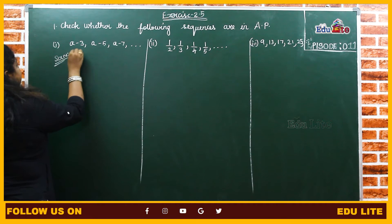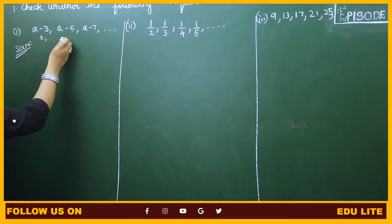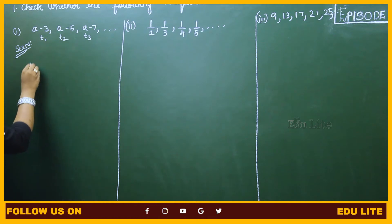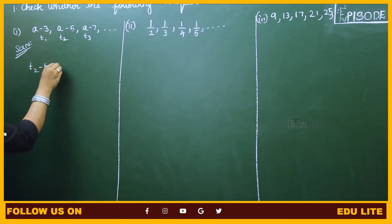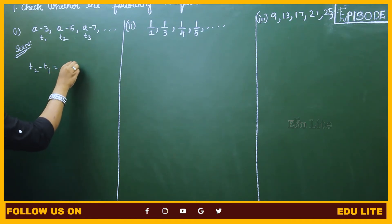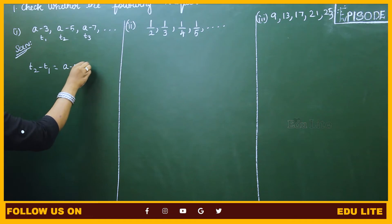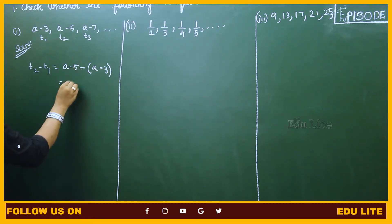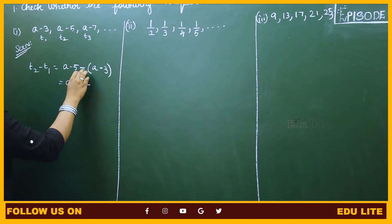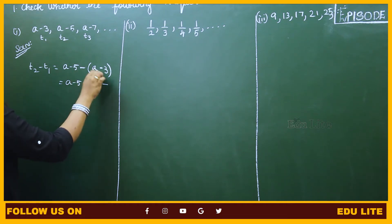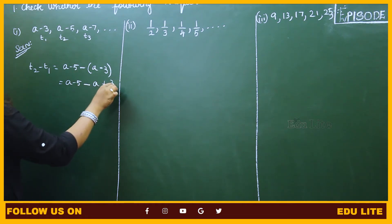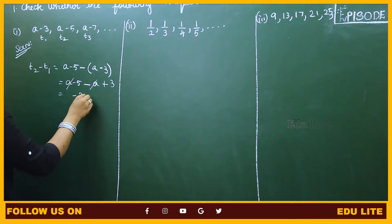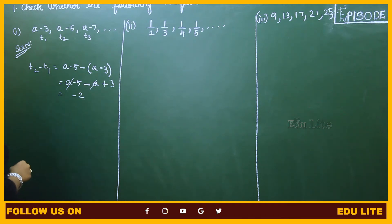In the first subdivision, we identify T1 as the first term, then the second and third terms. T2 minus T1 is: T2 value is A minus 5, minus T1 value which is A minus 3. So A minus 5 minus A plus 3 — A and A cancel, giving minus 5 plus 3 which is minus 2.